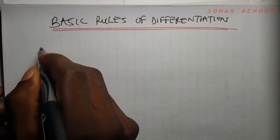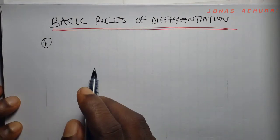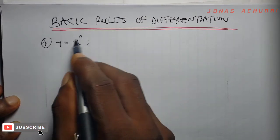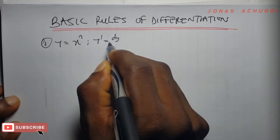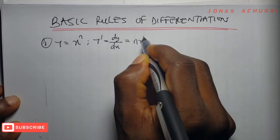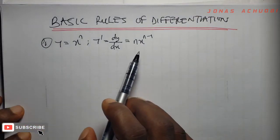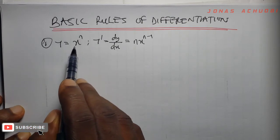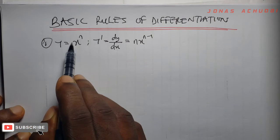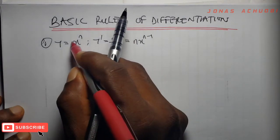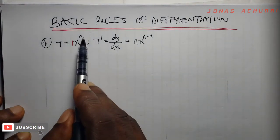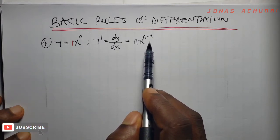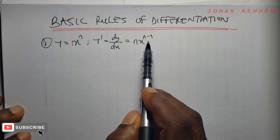Basic rules of differentiation. Rule number one, which I call the Power Rule: if y is equal to some function of x that has a power n, then when we differentiate this function, which we call y prime or dy/dx, we have n times x to the power n minus one. The rule is saying: to differentiate x to the power n, you multiply the coefficient by n, then subtract one from the power.